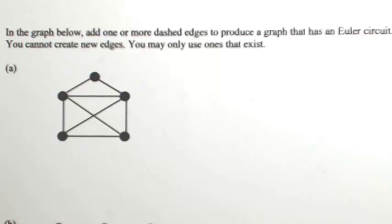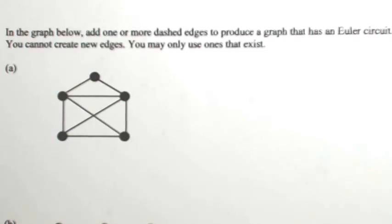In the graph below, add one or more dashed edges to produce a graph that has an Euler circuit. You cannot create new edges; you may only use ones that already exist. So looking at this first graph, the first thing I would do is see what the degree of every vertex is, because maybe it already has an Euler circuit.